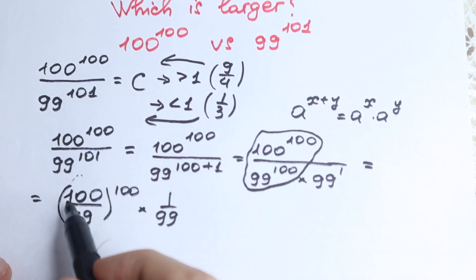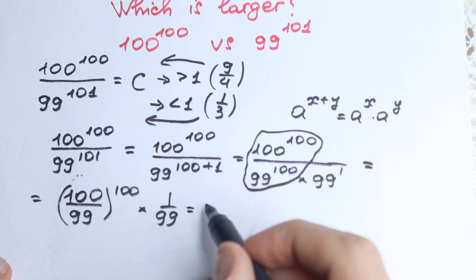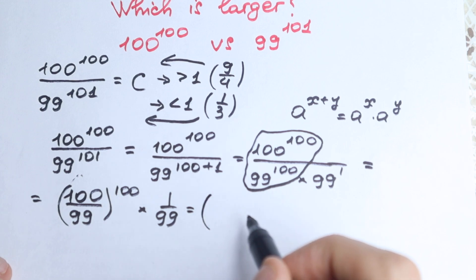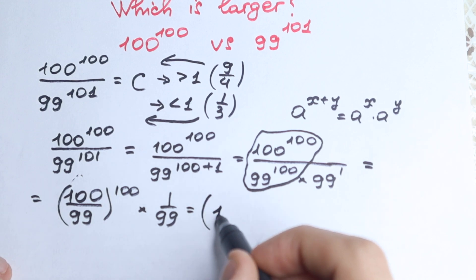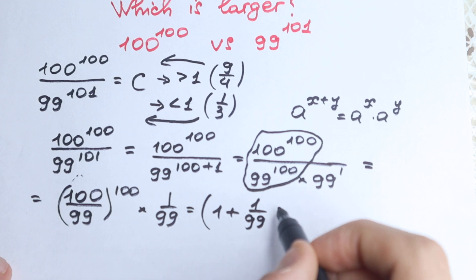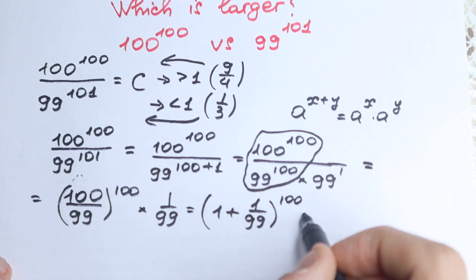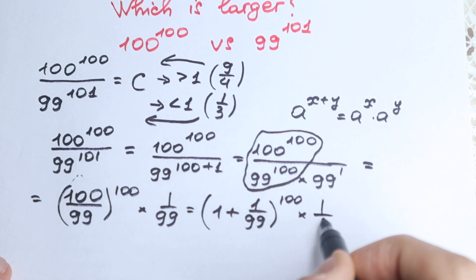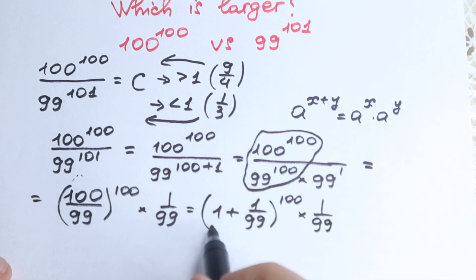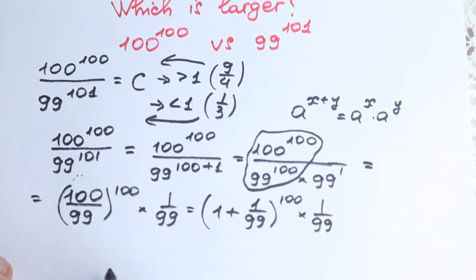Right now let's rewrite 100 over 99 in another way: we have (1 plus 1 over 99) to the power 100, times 1 over 99. If we add the terms in the fraction we get the same 100 over 99, so this is equivalent.